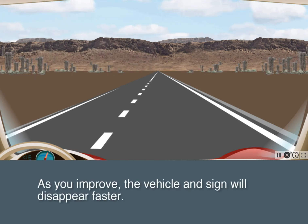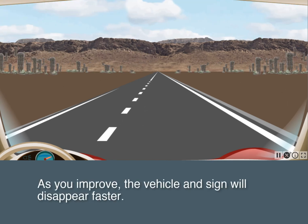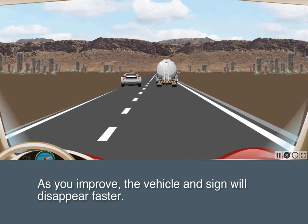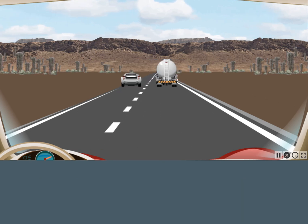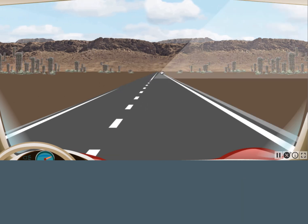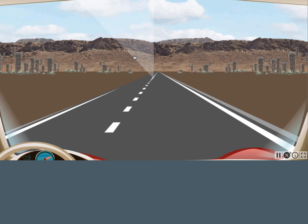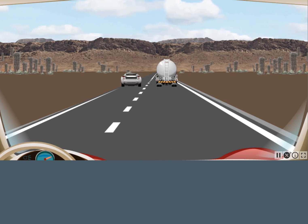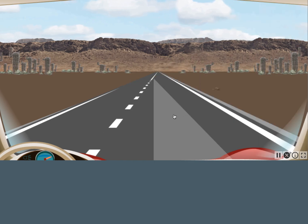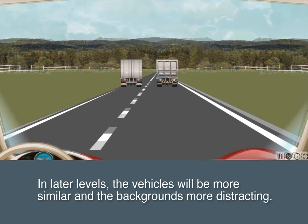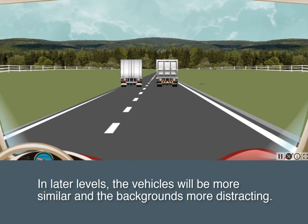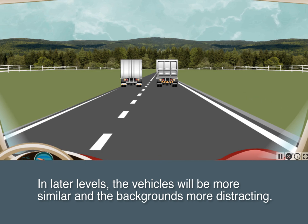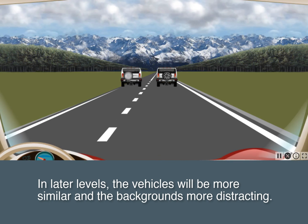As you improve, the vehicle and sign will disappear faster. In later levels, the vehicles will be more similar and the backgrounds more distracting.